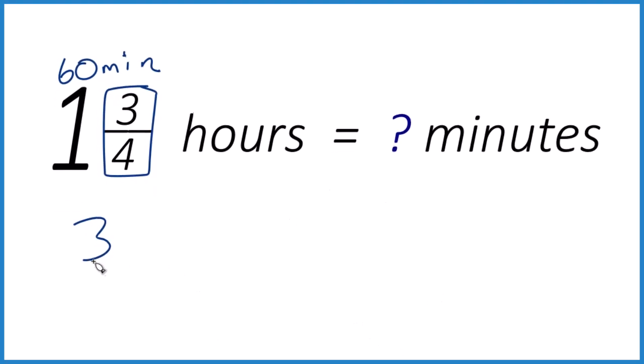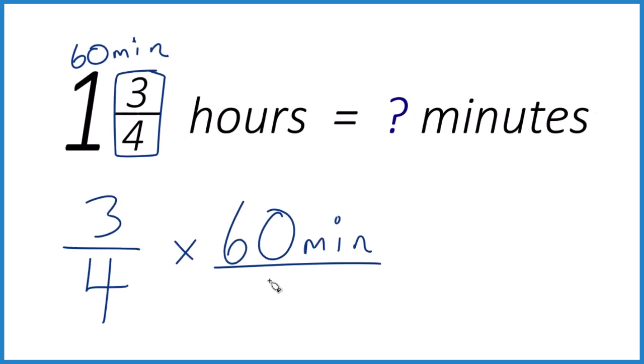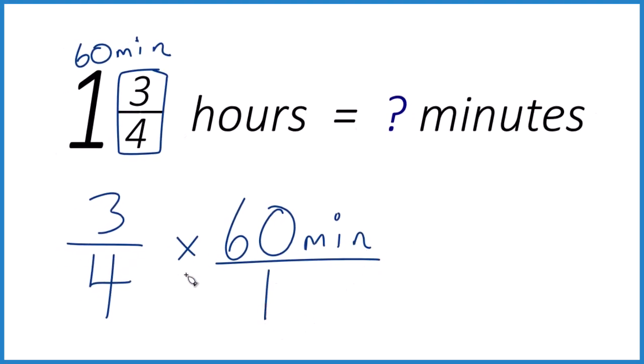So let's do it. Three-fourths of an hour. So if one hour is 60 minutes, we could just take three-fourths times 60 minutes here, and that'll tell us how many minutes are in three-fourths of an hour. I like to call this 60 over 1. They line up. So 3 times 60, that equals 180 minutes here, and 4 times 1 equals 4.